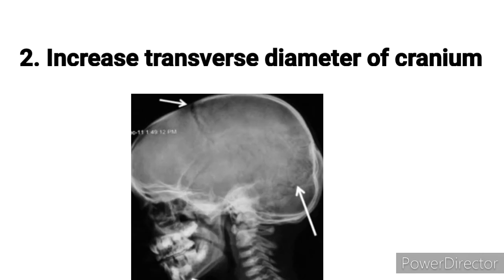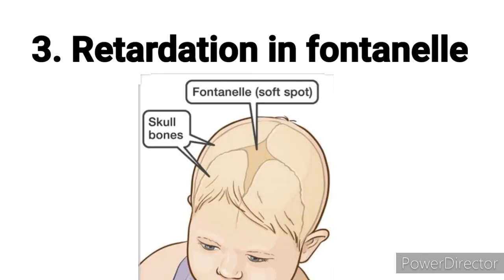The second cardinal feature is an increase in the transverse diameter of the cranium. The cranium is the outer bony covering that protects the brain. In cleidocranial dysostosis, the diameter of the cranium is increased. This is the second cardinal feature.